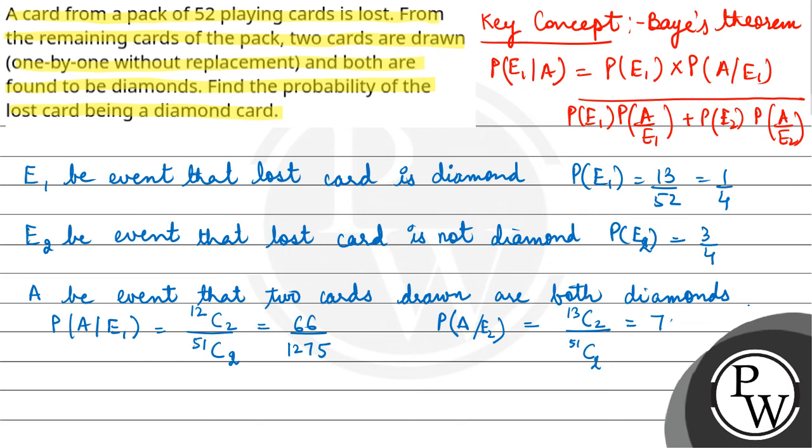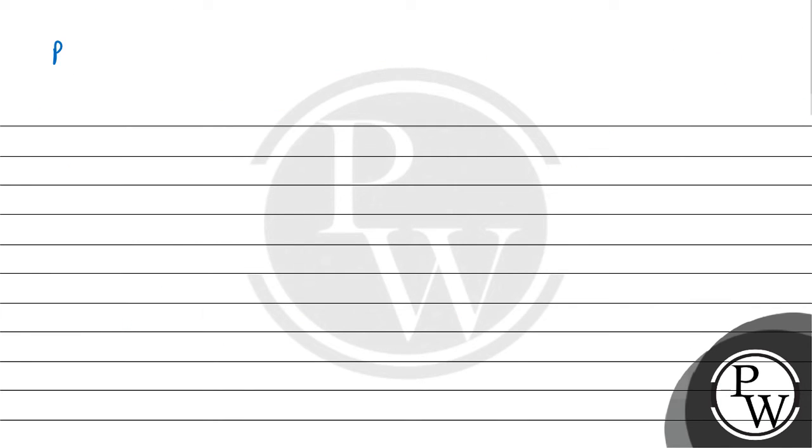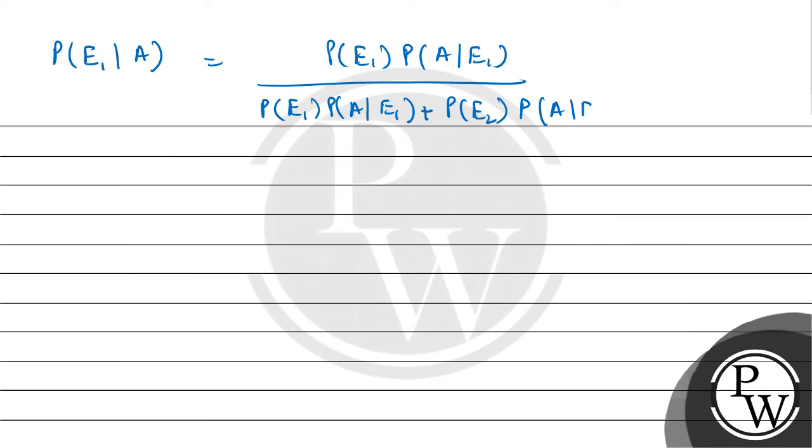Now we will apply this theorem. So P(E1 given A) will be P(E1) times P(A given E1) upon P(E1) times P(A given E1) plus P(E2) times P(A given E2). So after putting the values, 66 upon 1275 into 1 by 4, upon 66 upon 1275 into 1 by 4 plus 78 upon 1275 into 3 by 4. So this is equal to 11 by 50.